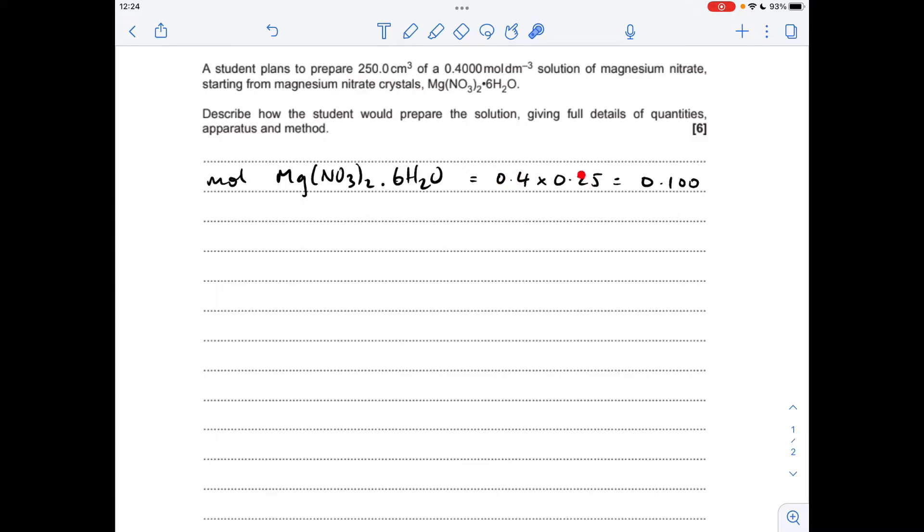So concentration times volume in decimeters cubed gives us 0.1 moles, and to convert that to grams it's just moles times MR, so we need 25.63 grams.